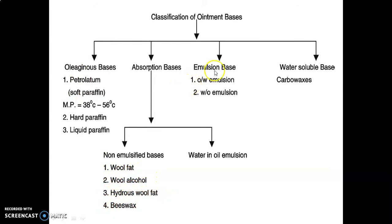Emulsion bases are of two types: O/W (oil in water) emulsion where oil acts as internal phase while water acts as external phase, and W/O emulsion where water acts as internal phase while oil acts as external phase. Water-soluble bases include carbowaxes.